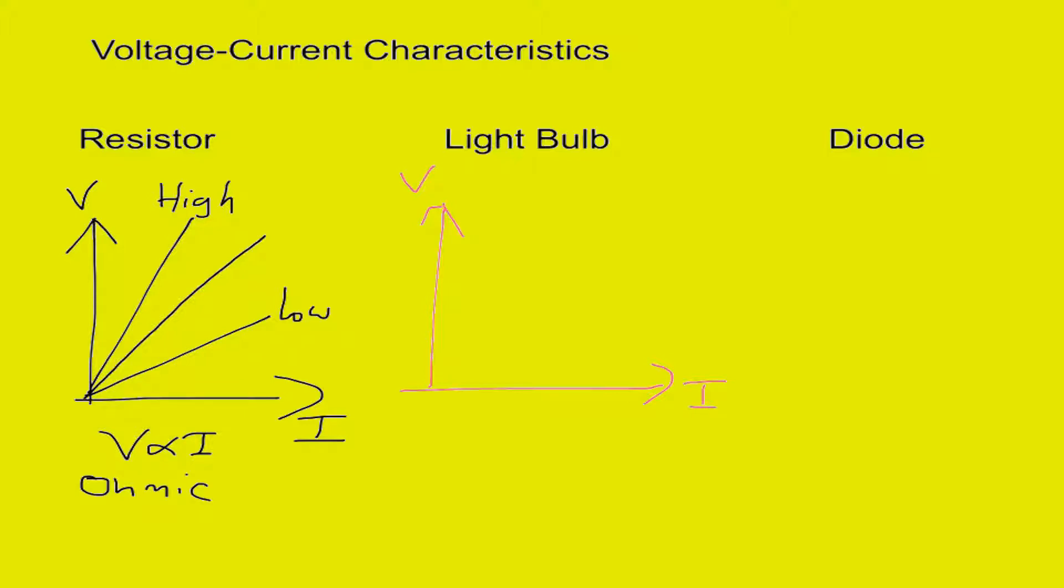The tungsten filament in a standard light bulb has a tendency to increase its resistance as you increase the temperature. So what we actually end up with is a curve looking something like that.